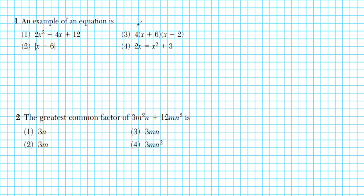An example of an equation is? To answer this question we have to take a close look at what an equation is. An equation is basically a mathematical statement with an equality sign in it. So whichever option has the equal sign, that makes it the statement an equation.